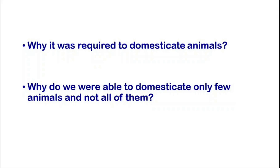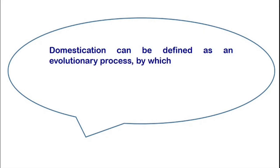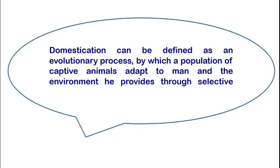Before moving on, we need to understand what is domestication. Domestication can be defined as an evolutionary process by which a population of captive animals adapt to man and the environment he provides through selective breeding.